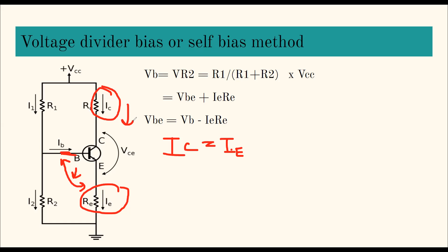To repeat the stability mechanism: as temperature increases, IC increases; since IC equals IE, IE also increases. But VBE decreases, reducing the junction voltage, which causes IC to decrease again. This negative feedback loop is how the voltage divider bias maintains thermal stability — it self-corrects whenever temperature changes disturb the operating point.